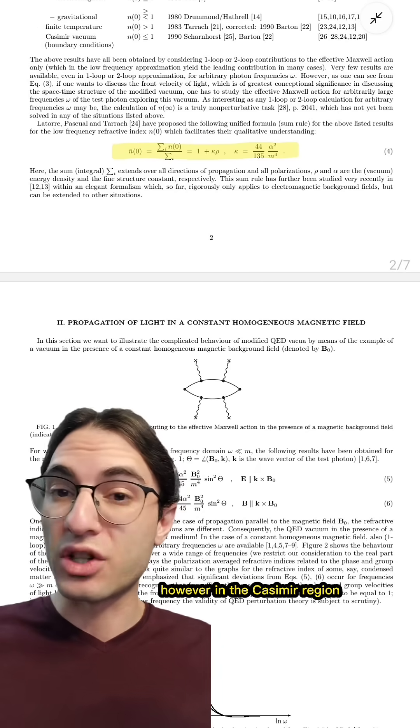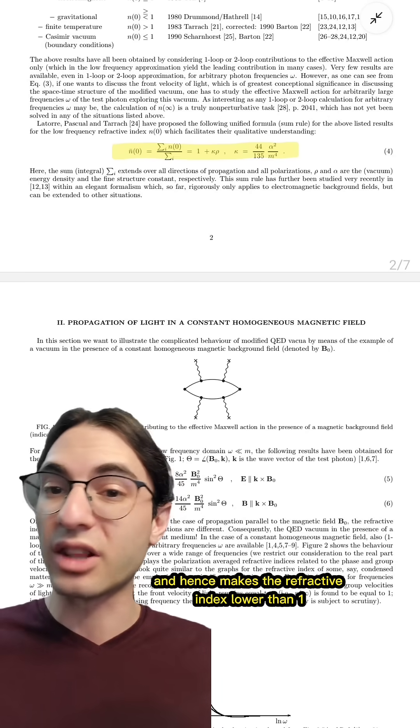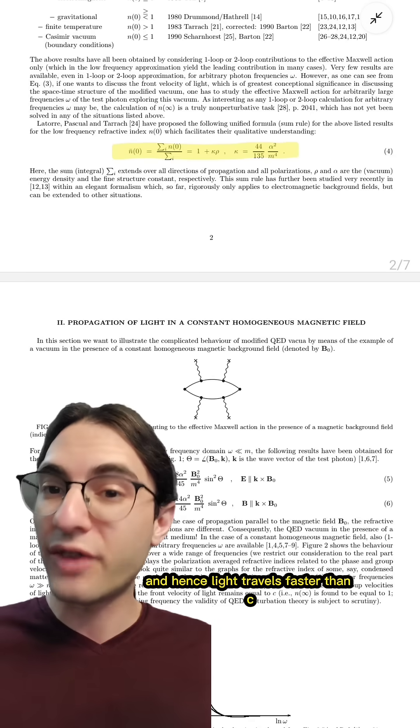However, in the Casimir region, the energy density is negative and hence makes the refractive index lower than one, and hence light travels faster than C.